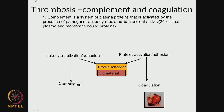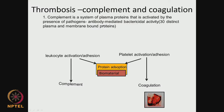When the material is in contact with blood, two things happen: complement activation and coagulation. The complement is a system of plasma proteins that is activated by the presence of pathogens and antibody-mediated bactericidal activity. There are 30 distinct plasma and membrane-bound proteins. Their job is to identify pathogens, bacteria, and foreign bodies so they can be attacked by the host immune system.